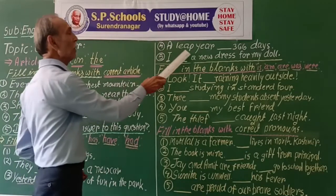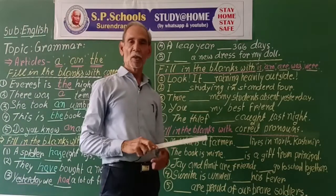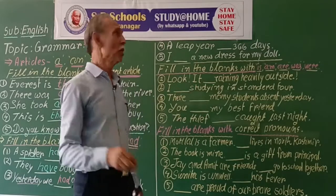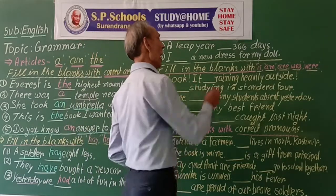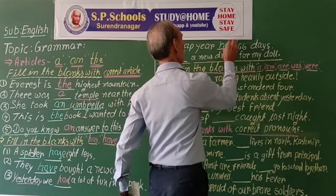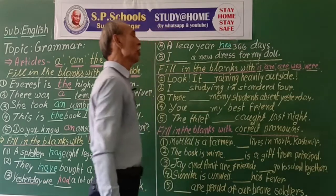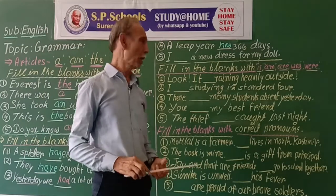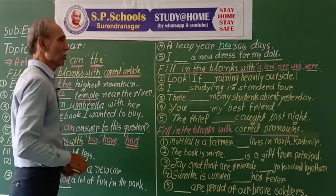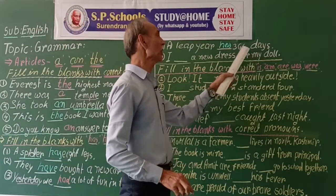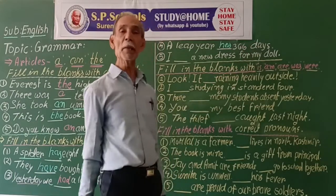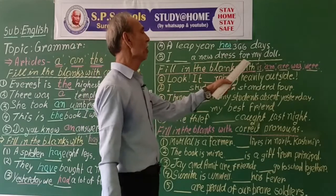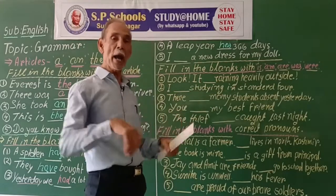A leap year — it is true always — so a leap year has 366 days: 29 days of February, so instead of 365 there are 366 days for every leap year. I have a new dress for my doll.